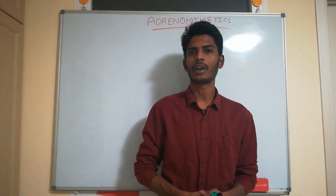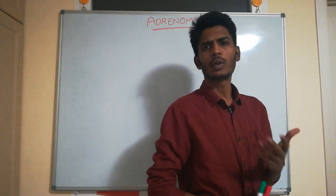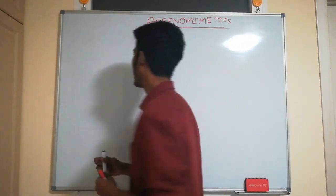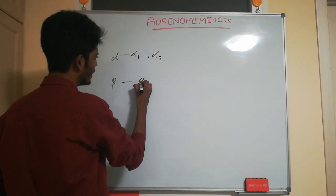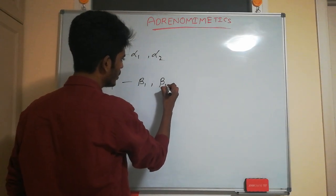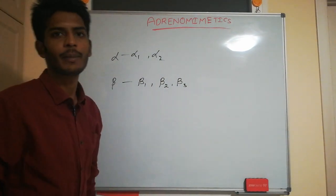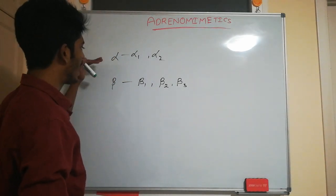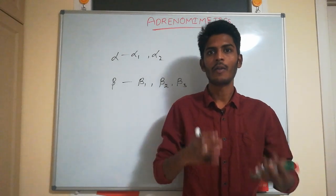Adrenomimetics are a group of drugs which stimulate adrenoreceptors. Adrenoreceptors include alpha and beta receptors. Alpha is divided into alpha 1 and alpha 2, and beta is divided into beta 1, beta 2, and beta 3. Adrenomimetics mimic the activity of adrenaline, so they can stimulate alpha or beta receptors.